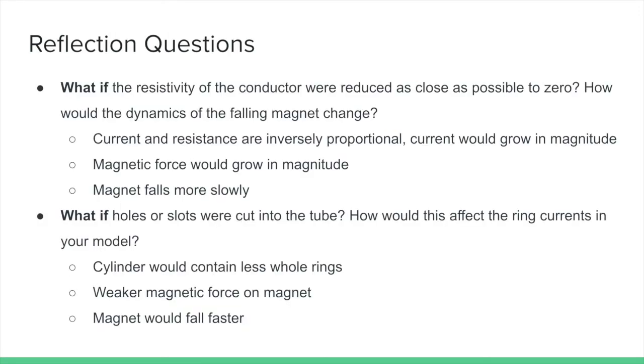To reflect on this lab, let's ask: What if the resistivity of the conductor were reduced as close as possible to zero? How would the dynamics of the falling magnet change? Current and resistance are inversely proportional, so current would grow in magnitude. Hence, the magnetic force would grow in magnitude and the magnet would fall more slowly.